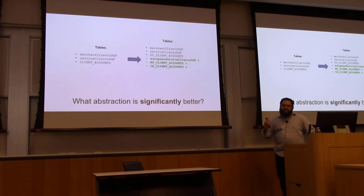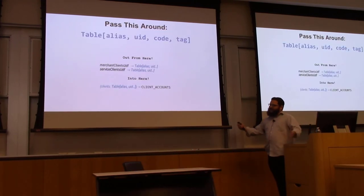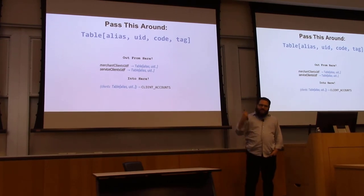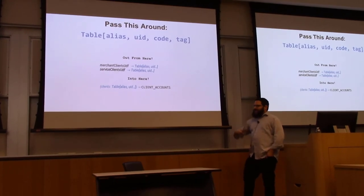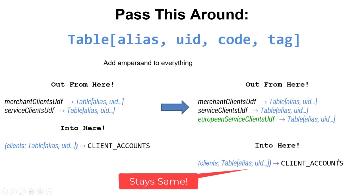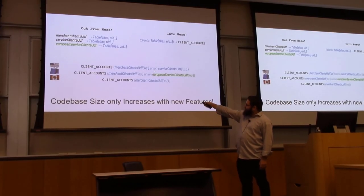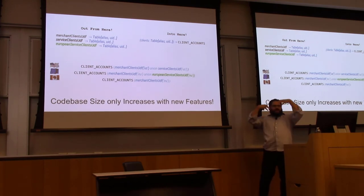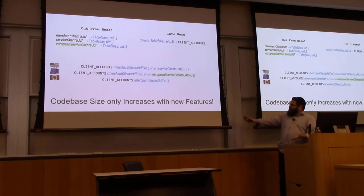So what abstraction is the one that we want? What would give us our DRY principles? Here's what it would be: if we could define a variable—table of these four columns—that's what the merchant client and service client is. It is a table of these four columns. If we could define a variable that represents a table of these four columns, we could return the table of these columns out of this and then pass it into this. We wouldn't need EU client accounts or Canadian client accounts—we'd just have one client accounts table. This would be the result of our refactor. And this is the controllable technical debt—this is where we have a controllable feature set.